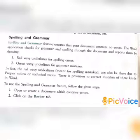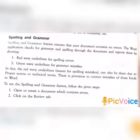The first topic is Spelling and Grammar. The Spelling and Grammar feature ensures that your document contains no errors, because it checks for grammar and spelling mistakes in your document. Any errors found in your document are reported by red wavy and green wavy underlines.